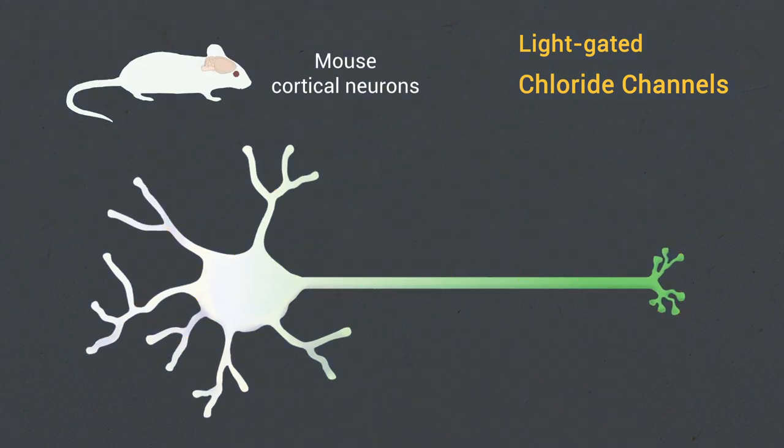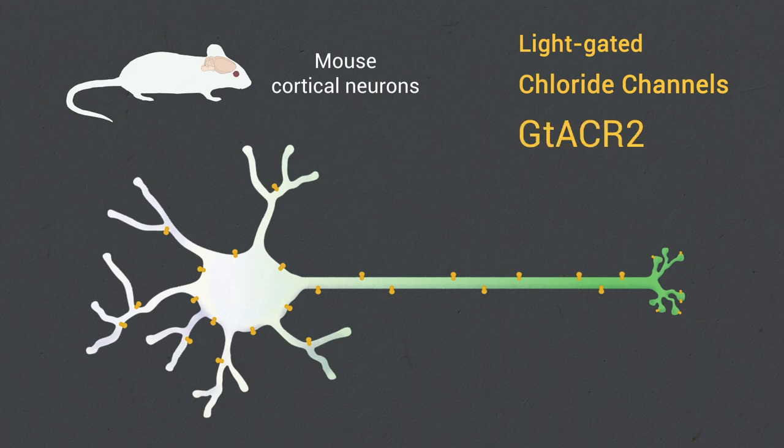In this study, we characterize a light-gated chloride channel called GT-ACR2 in mouse cortical neurons.